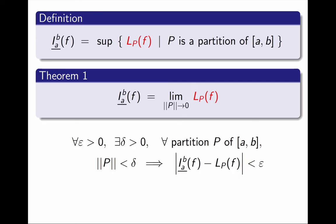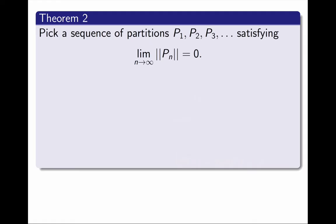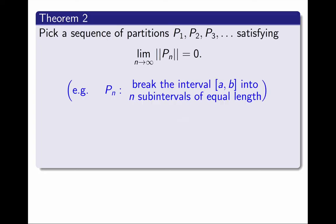There is a trick, and it comes from a second theorem. Instead of using all partitions, we can pick a specific sequence of partitions, call them P₁, P₂, P₃, and so on, as long as the NORM of Pₙ approaches 0 as n approaches infinity. For example, we could choose the partition Pₙ to be the one that breaks the interval [a,b] into n subintervals of equal length.